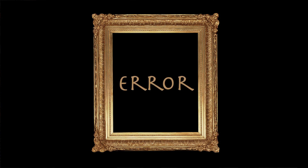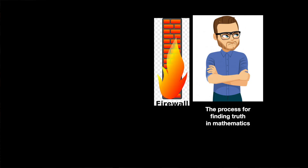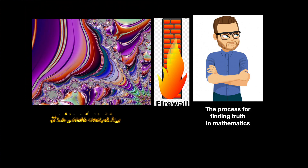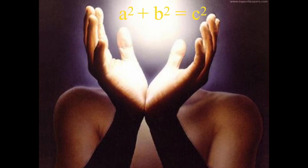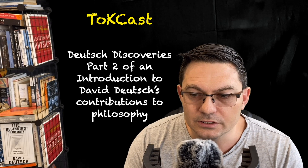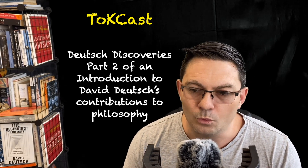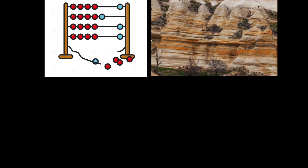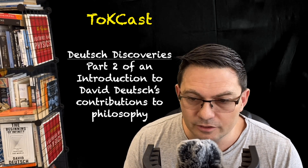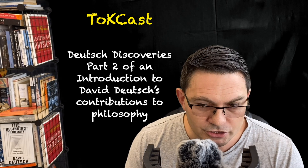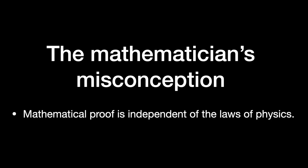Error is always part of the picture. The mathematician's misconception is that the process in mathematics can somehow stand apart from the physics — that they can tap into some kind of divine source of truth. But even if there were a divine source of truth, the tapping-in process is itself a physical one, and therefore subject to all the same kinds of errors any abacus, eroding stone, or jet engine is. In short, the mathematician's misconception is this: mathematical proof is independent of the laws of physics.